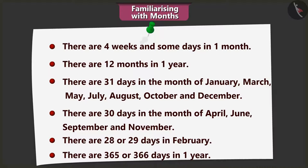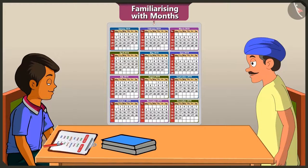Chotu, how many days are there in February? February has 28 or 29 days. Very good! Now tell me, how many days are there in a year? There are 365 or 366 days in a year. Now you know how to see the months and days in the calendar, right? Yes uncle, now I know it very well. Very good Chotu!